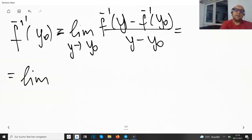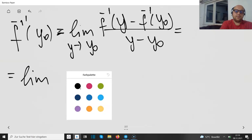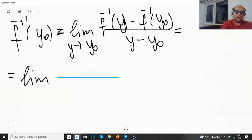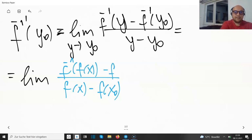And now let us rewrite it. What is y in the denominator? This is f(x). What is y₀? This is f(x₀). What is y here? Well, this is f(x) again, and this is f(x₀) as well.